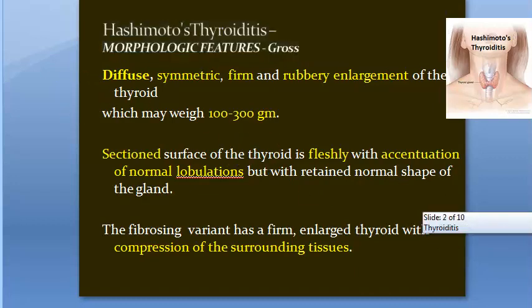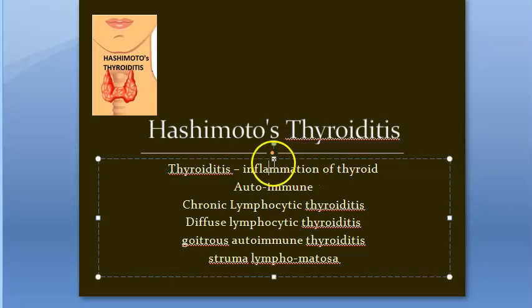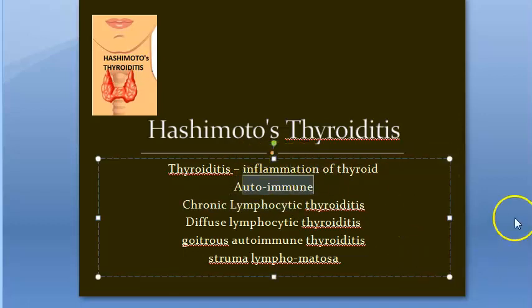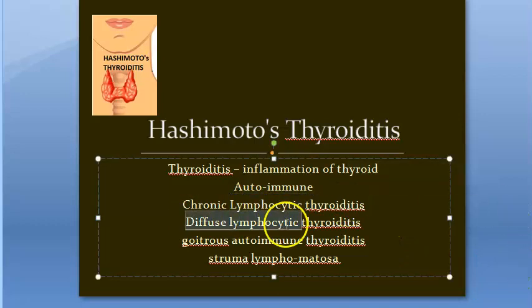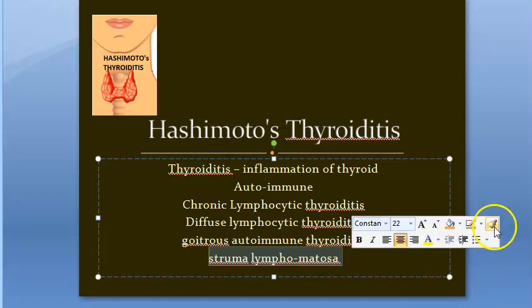First let us look at what we have seen so far — a recap. We saw what Hashimoto's thyroiditis is: it is inflammation of the thyroid caused due to autoimmune reasons. The other names are chronic lymphocytic thyroiditis, diffuse lymphocytic thyroiditis, goitrous autoimmune thyroiditis, and struma lymphomatosa.